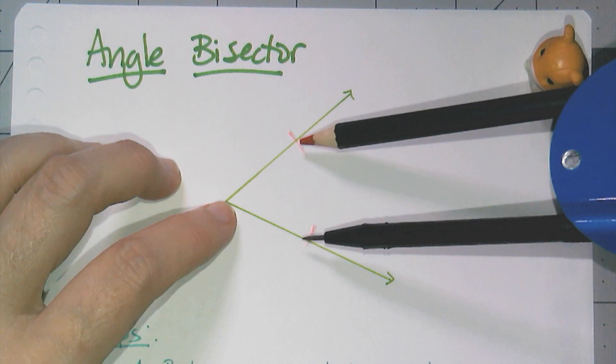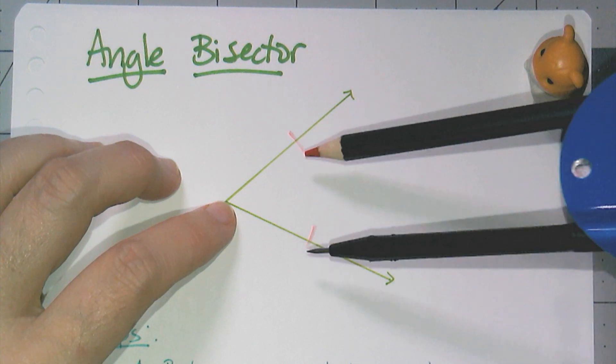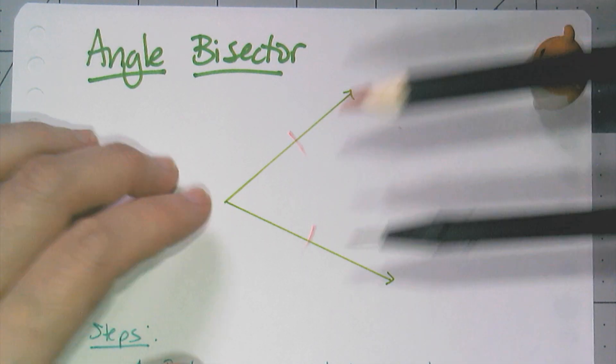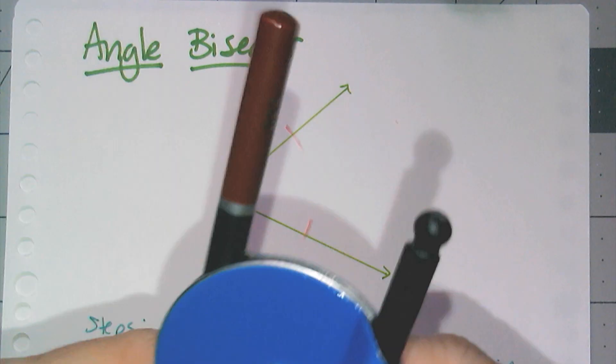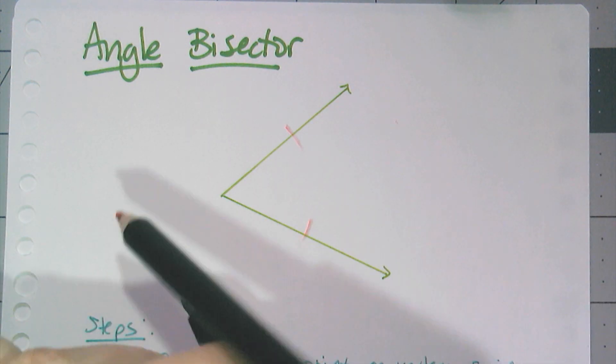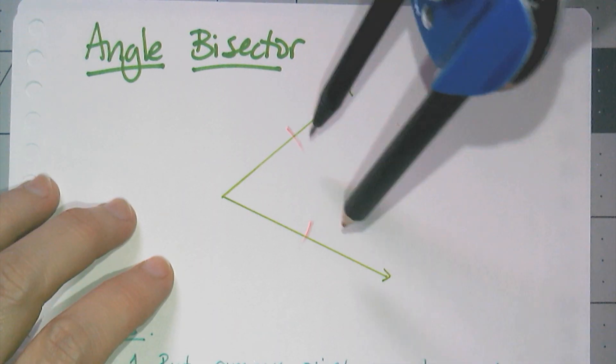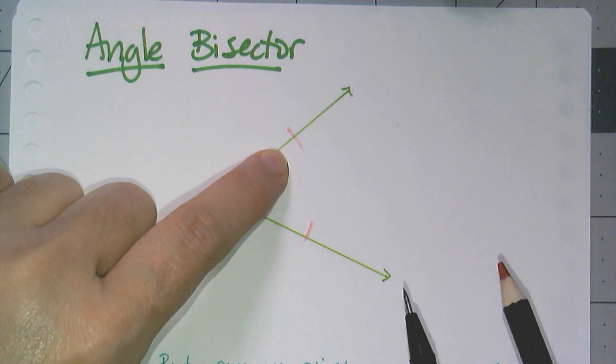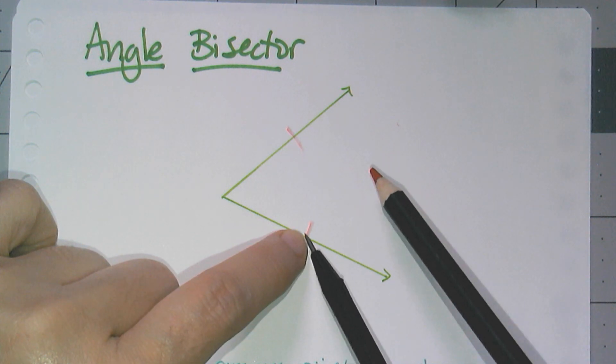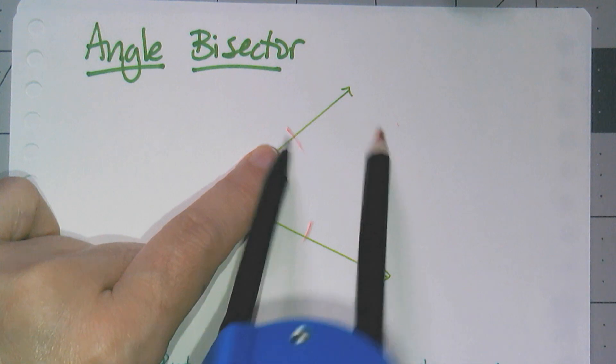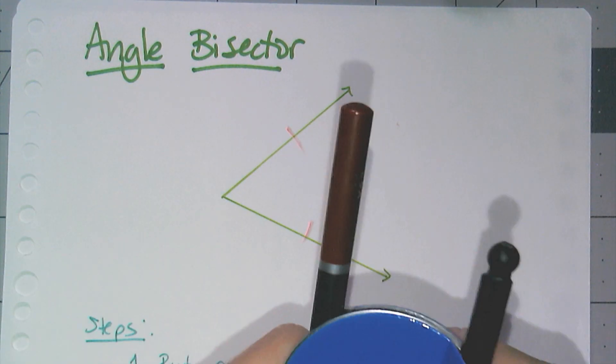I didn't swing the entire arc. I just marked the intersection points between the arc and the sides of the angle because that's what I really need. Now using pretty much any radius that I could fit on my paper, I'm going to swing an arc from each of these intersection points, and where they intersect is what I'm interested in.